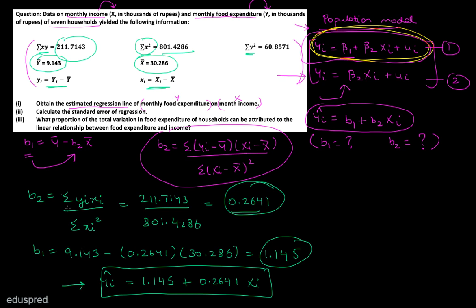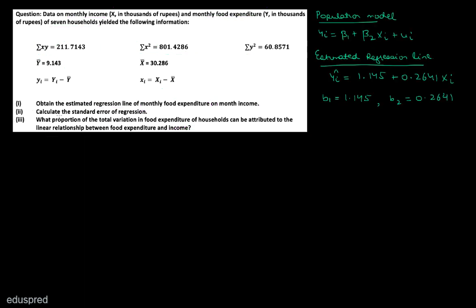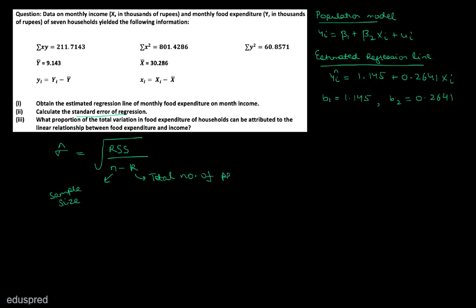This is the answer to the first part. Let's move to the second part now. In this part, we have to calculate the standard error of regression. The standard error of regression is denoted by sigma hat, and the formula is the square root of the residual sum of squares divided by n minus k, where n is the sample size and k is the total number of parameters, including the intercept.